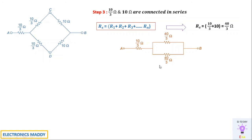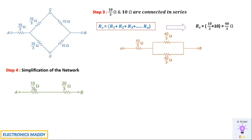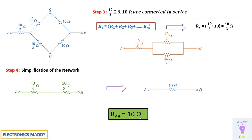When two equal resistors are in parallel, the effective value is half — so 40/3 in parallel gives 20/3 ohms. This is then in series with the remaining 10/3 ohm resistor: 10/3 + 20/3 = 30/3 = 10 ohms. So the effective resistance Rab is 10 ohms.